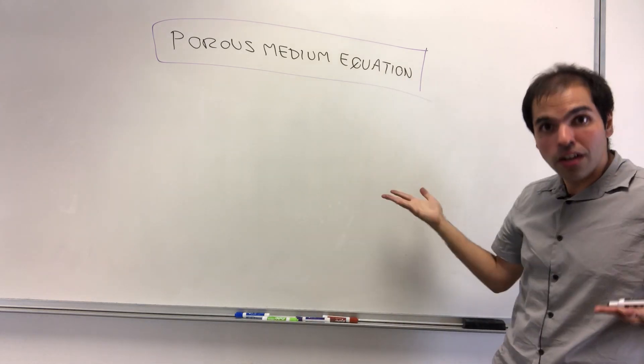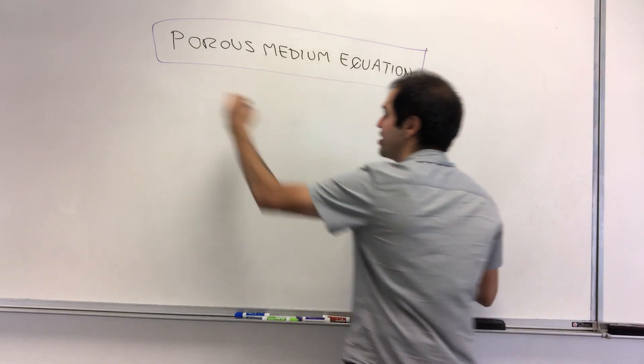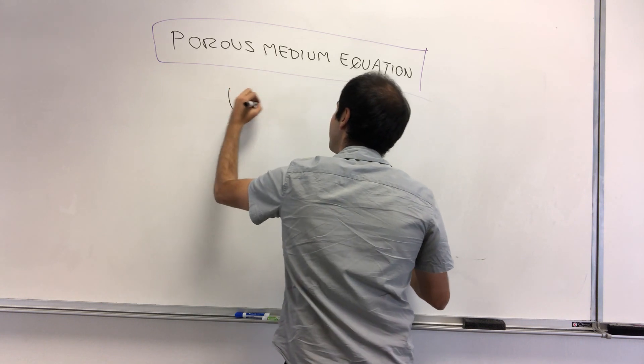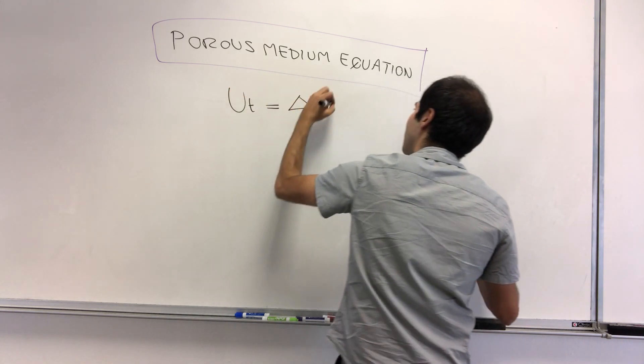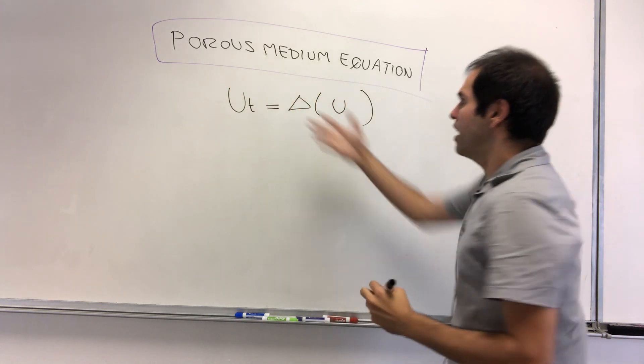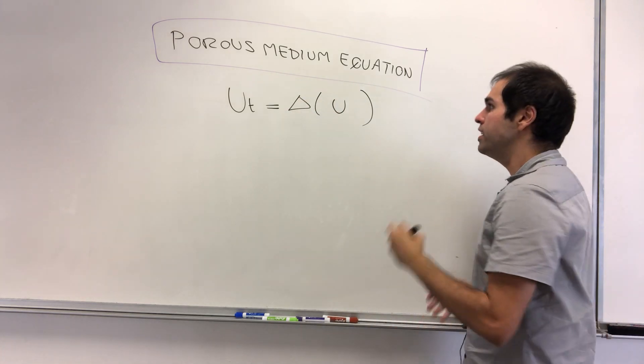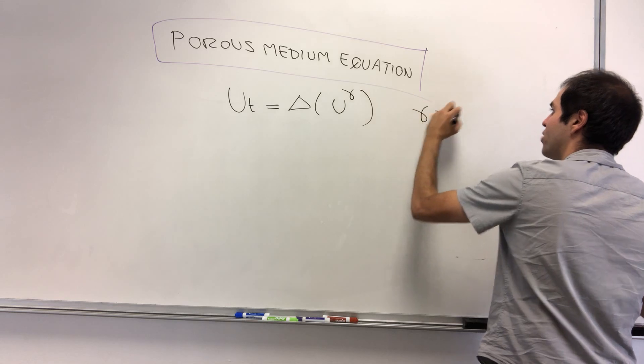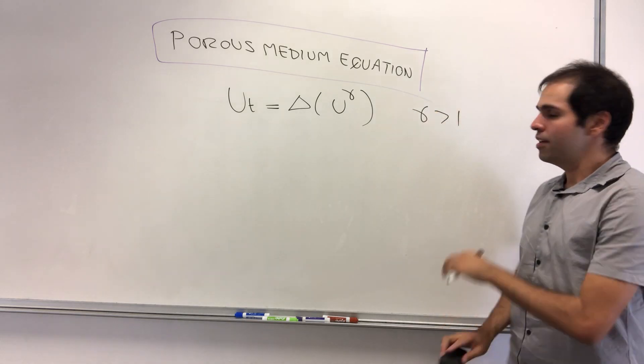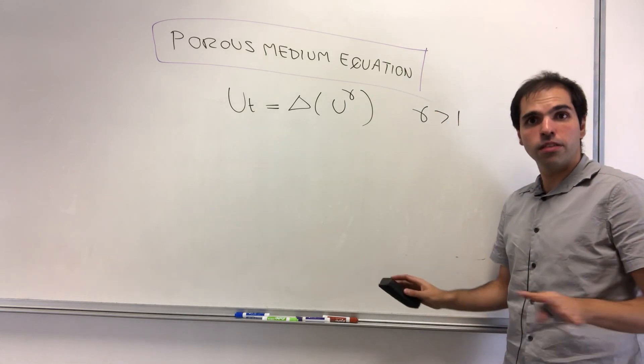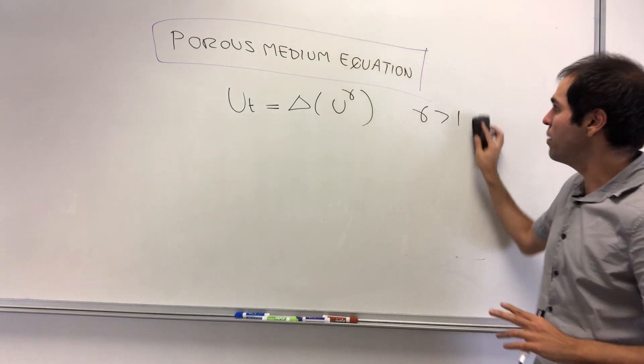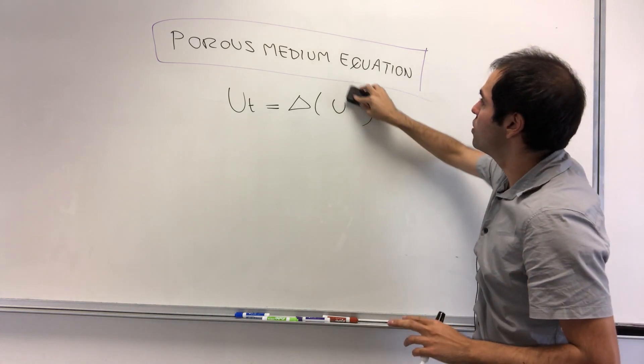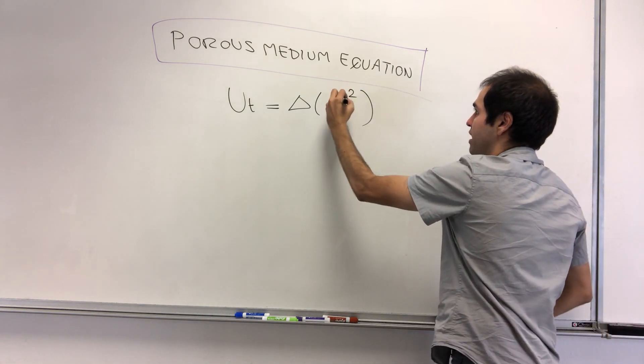And in particular, it does look kind of like the heat equation, because the heat equation is ut equals Laplacian of u, but now we want to solve ut equals Laplacian of a power of u, u to the gamma, where gamma is bigger than 1. And already, let me simplify things. Let's assume gamma is 2, and I will give you the general solution later.